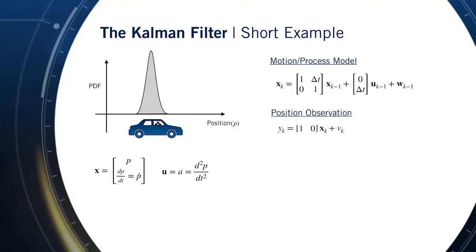For our measurement, we'll assume that we're able to determine the vehicle position directly, using something like a GPS receiver. Finally, we'll define our noise variances as follows.